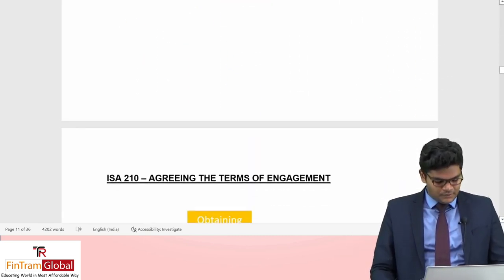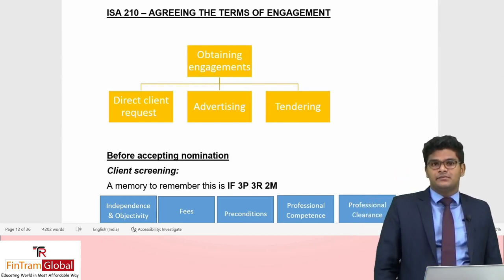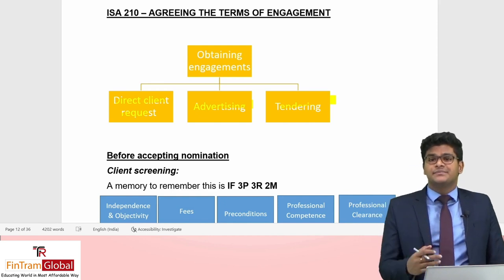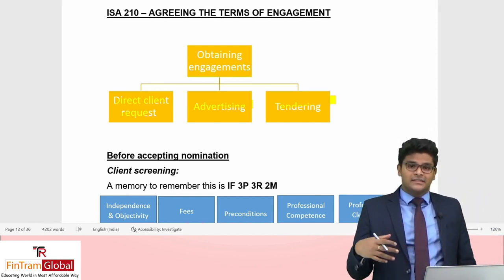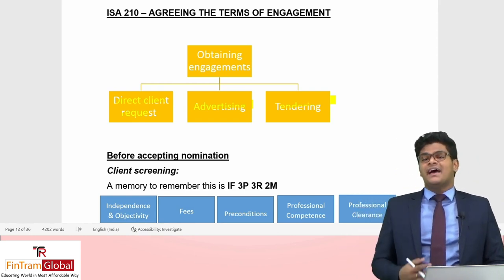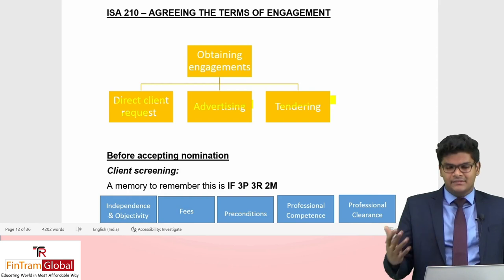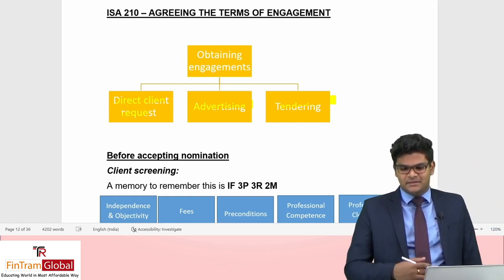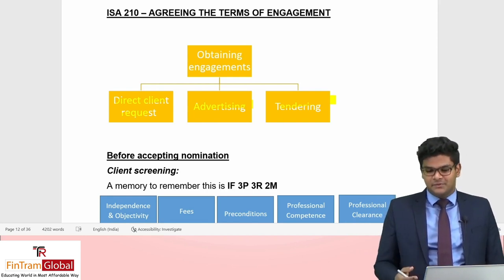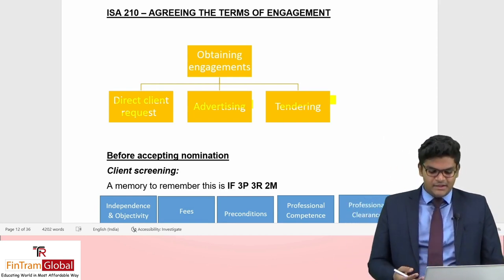Moving on to ISA 210, Agreeing the Terms of Engagement. An audit engagement can be obtained through three methods: direct client request (the client directly approaches the audit firm to audit their financial statements), advertising (the audit firm advertises its services through digital marketing, business journals, or other means), and tendering — which is commonly seen in the industry.